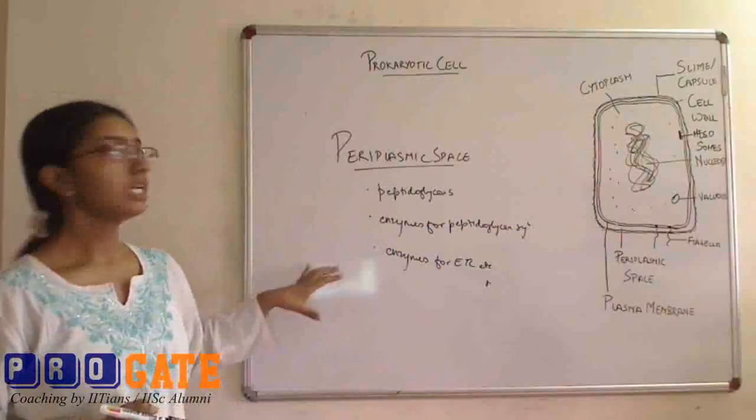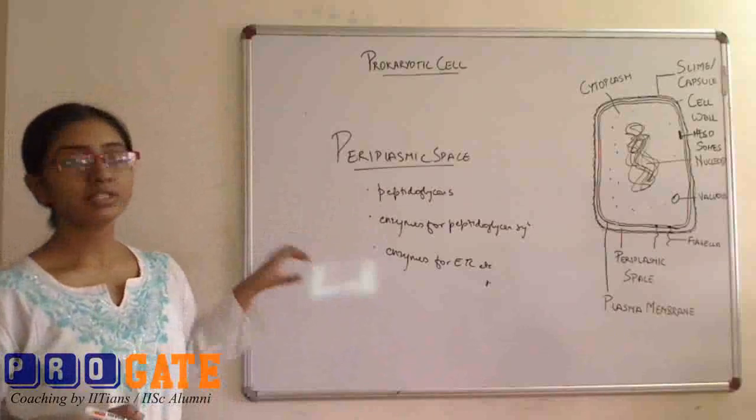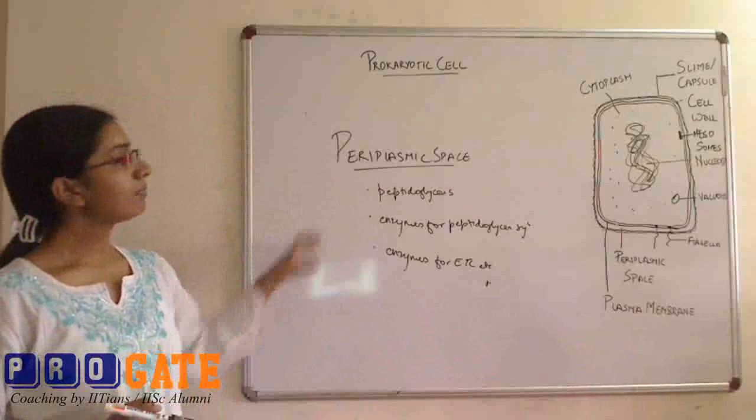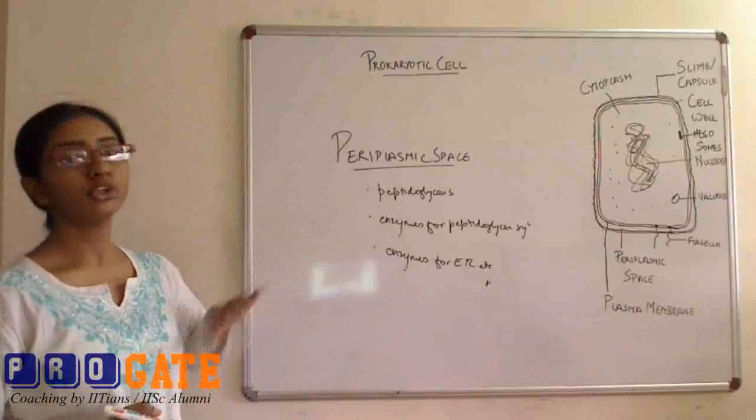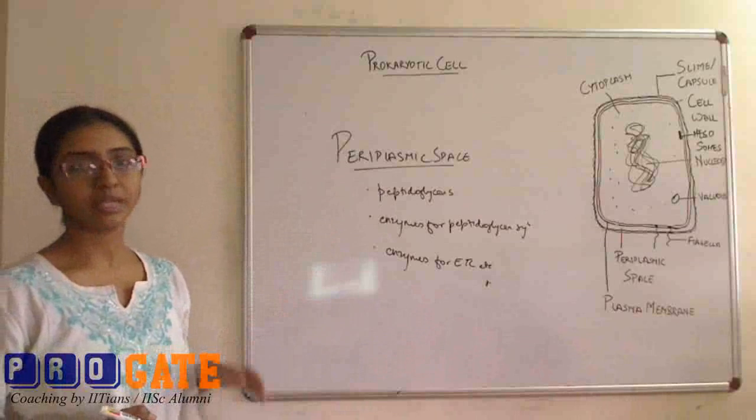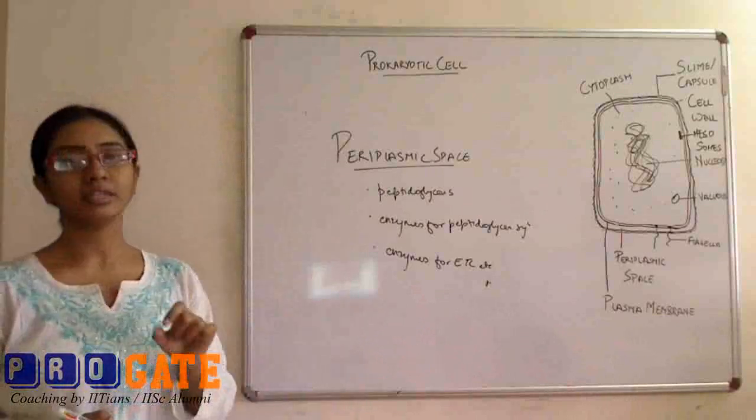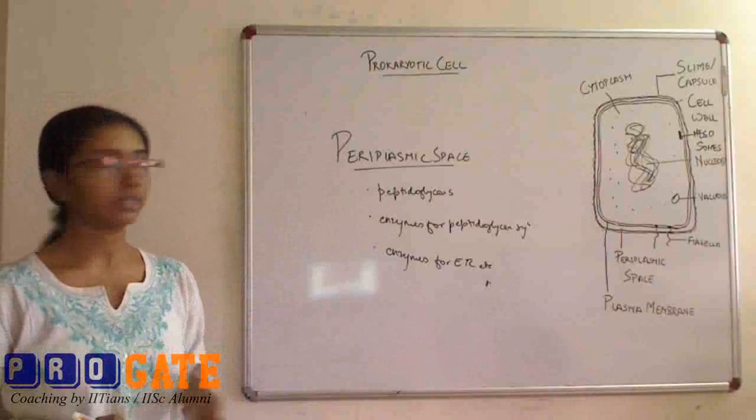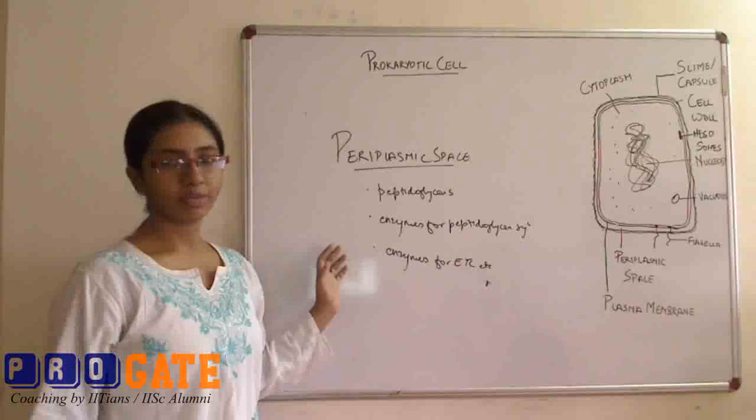So basically, in gram-negative bacteria, generally a periplasmic space is very small because of the presence of the outer wall. So what happens is that all these enzymes that are present in the periplasmic space, they do not exist in gram-negative bacteria. Also, the cell wall is also very thin in gram-negative bacteria as compared to the gram-positive bacteria. So these are the basic functions of a periplasmic space.